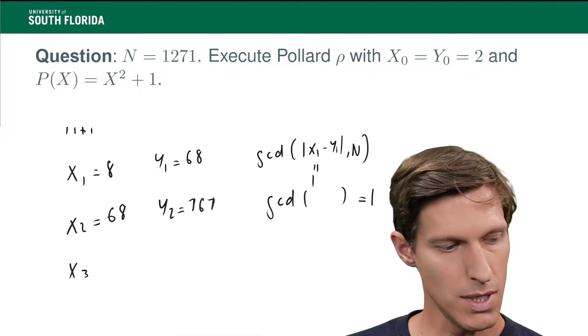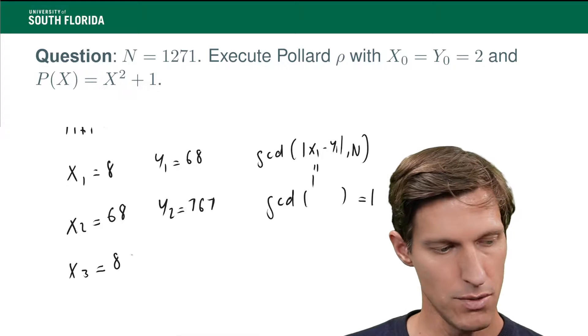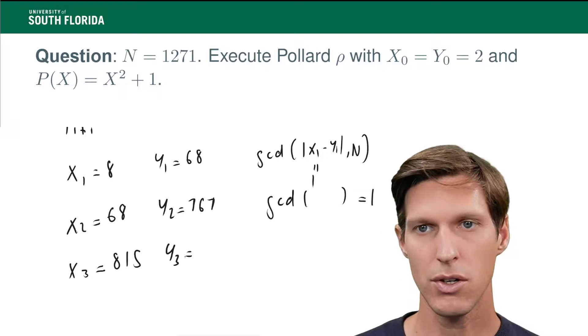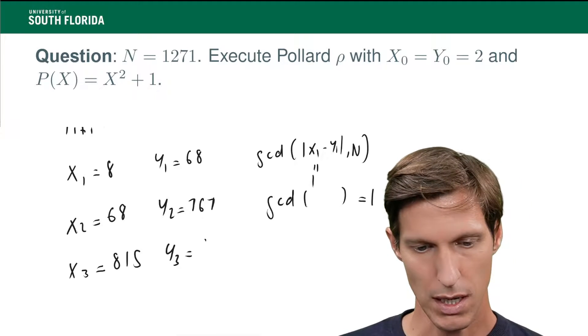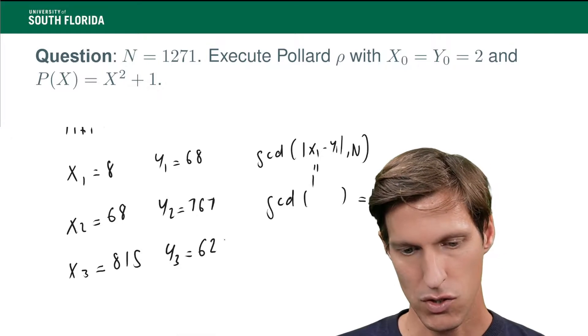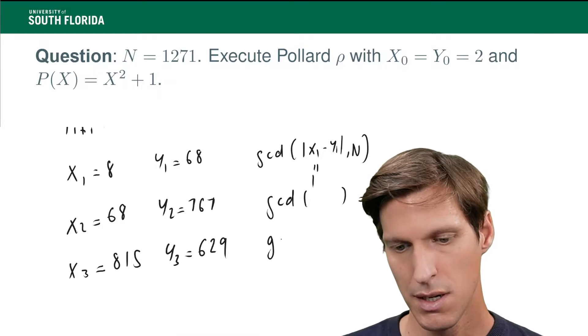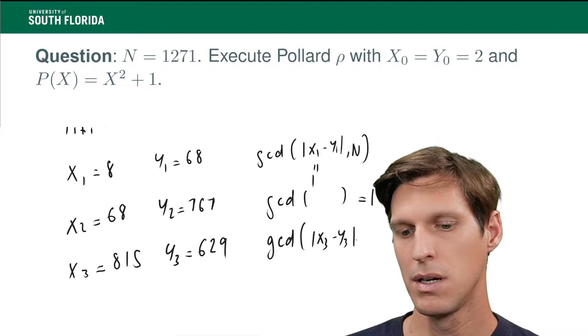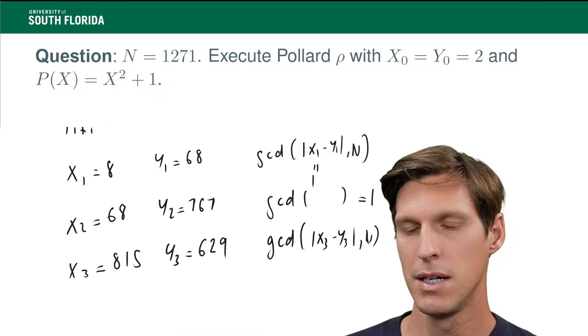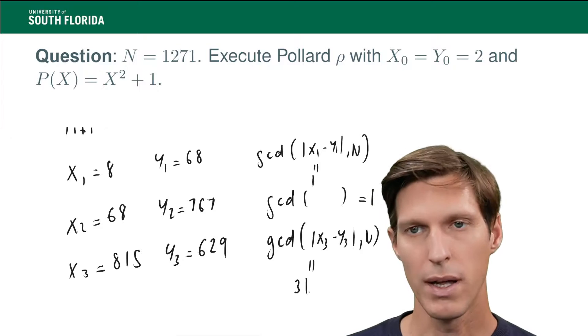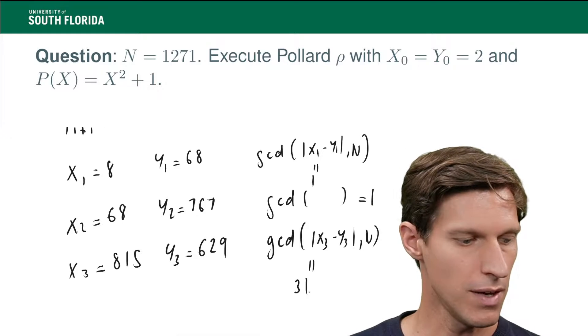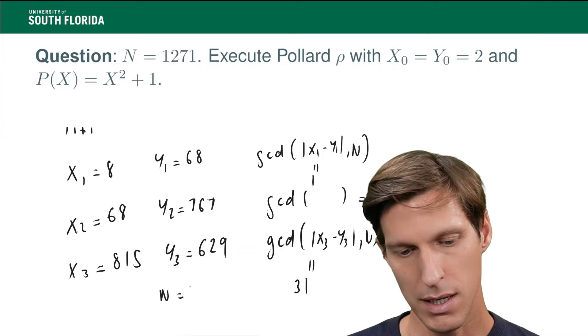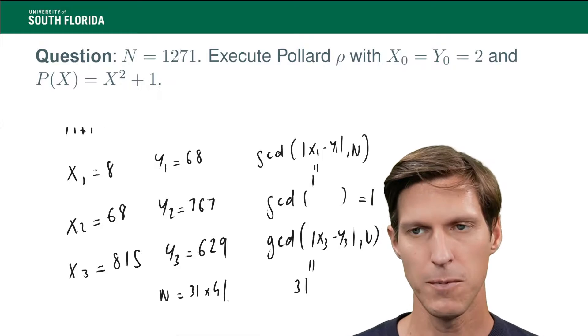And what we have next is x3 is 815. And y3, again, you need a calculator of course to calculate those values. I'm just using my cheat sheet here. 629. And now, the GCD of x3 minus y3, absolute value of course, and N. This value is 31, which means I have a non-trivial factor of N, and I can easily retrieve the other one, concluding that N is 31 times 41.